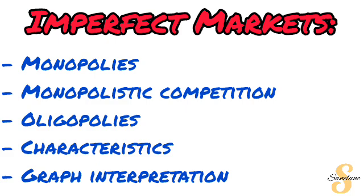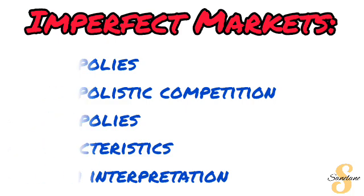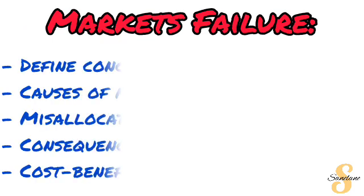Under all these types of markets, make sure you study the characteristics — the characteristics of monopolies, monopolistic competition, and oligopolies. These include the number of sellers in the industry, barriers to entry, information in the industry, and the type of products offered. Make sure you are comfortable with every one of those, and then finish with graph interpretation. Most importantly, prioritize the monopolies graphs.